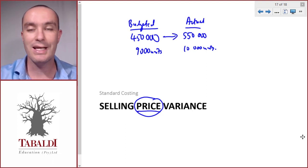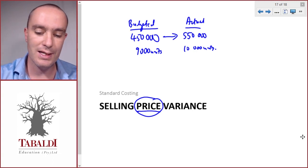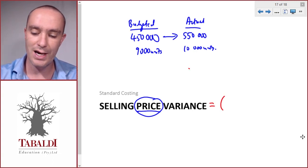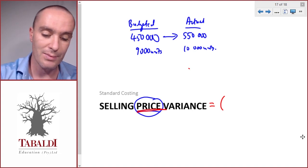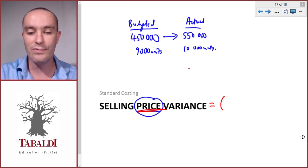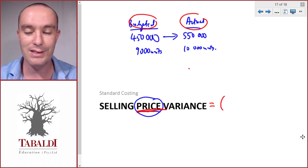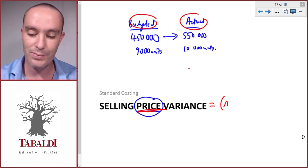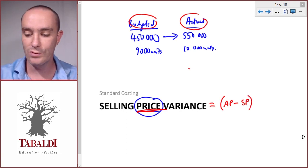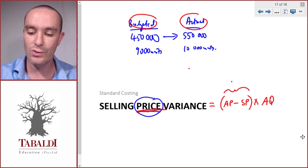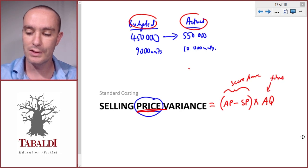Part of that reason would be the selling price variance. We need to isolate the price. Remember, there's always only one difference. If we have more than one difference between the two elements we're trying to compare, it's impossible to split it into its individual components. The selling price variance would be actual price less standard price, what we should sell it for, multiplied by actual quantity.